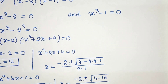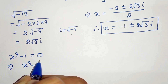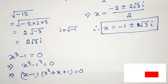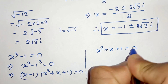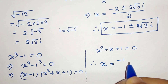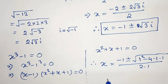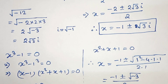Now for x cubed minus 1 equals to 0, this can be written as x cubed minus 1 cubed equals to 0, which factors as x minus 1 times x squared plus x plus 1 equals to 0. From this, x minus 1 equals to 0, therefore x equals to 1 is another solution. For x squared plus x plus 1 equals to 0, applying the quadratic formula gives x equals minus 1 plus or minus root of 1 minus 4, divided by 2, which is minus 1 plus or minus root of minus 3, divided by 2, giving x equals minus 1 plus or minus root 3 i, divided by 2. These are two more solutions.